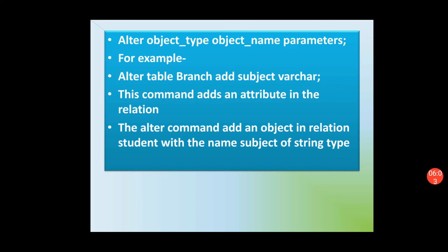For example, ALTER TABLE branch ADD subject VARCHAR — this command will add an attribute named 'subject' of string type to the relation, meaning it will add the variable 'subject' of string type inside the table 'branch'.